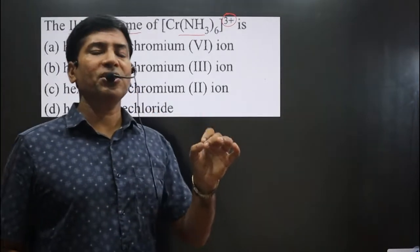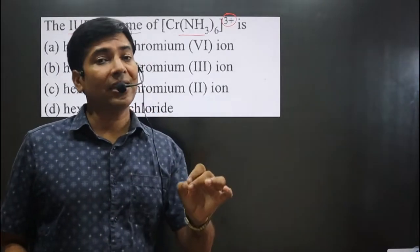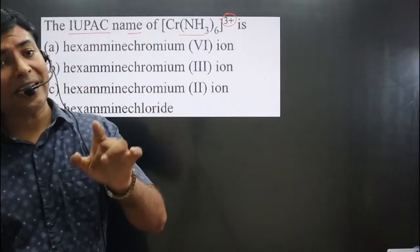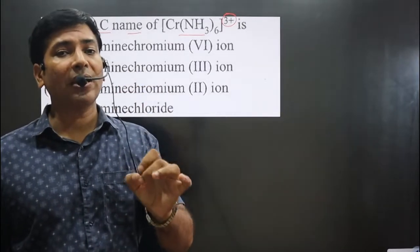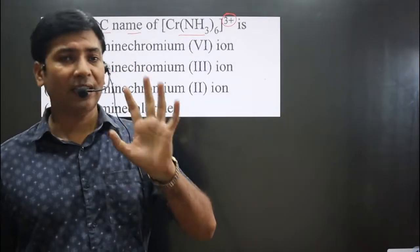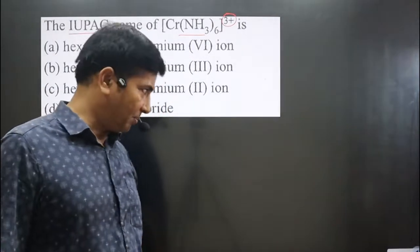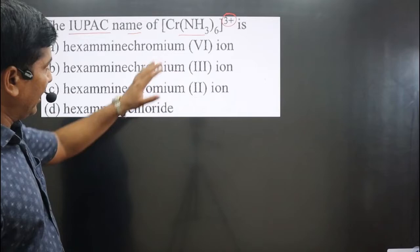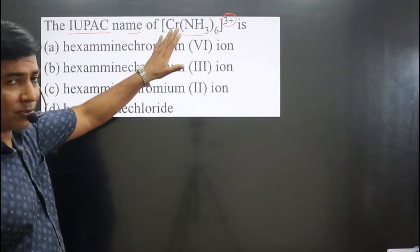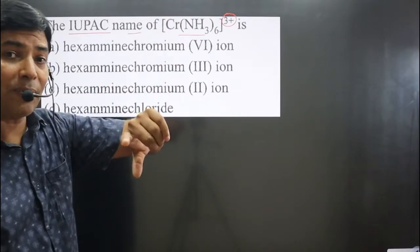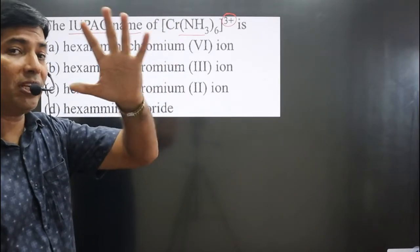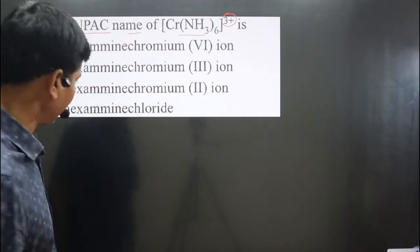Keep in mind: if the central metal atom is present in a cationic complex, we use its common name as given in the periodic table. In case the central metal atom is present in an anionic complex, we have to use its special name.